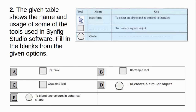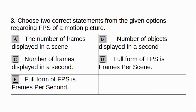The given table shows the name and usage of some of the tools used in Synfig Studio software. Fill in the blanks from the given options. A. Fill tool. B. Rectangle tool. C. Gradient tool. D. To create a circular object tool. E. To blend two colours in spherical shape. Answer: B and D.